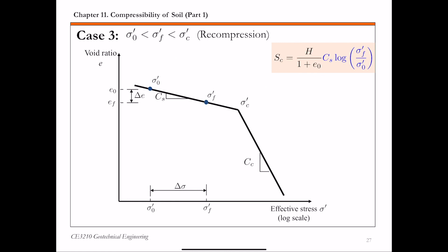The third case is where the initial effective stress sigma naught prime is smaller than sigma F prime, and sigma F prime is smaller than the pre-consolidation pressure sigma C prime. For case three, clay stays on the recompression part of the curve with slope C sub S. The expression for primary consolidation settlement SC makes use of the swell index or recompression index C sub S, and the highlighted part of the equation is the void ratio change delta E.